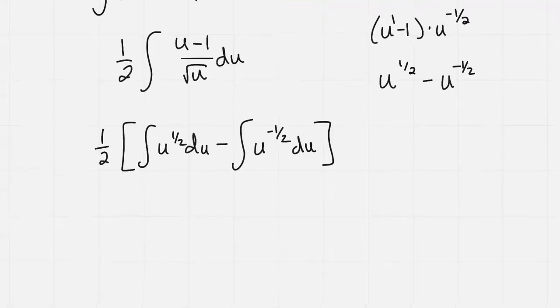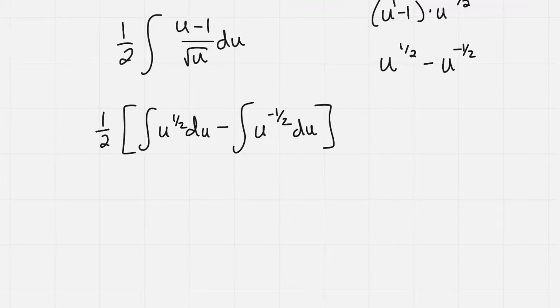And look at those anti-derivatives. This 1 half, I'll just keep all the way out in front. So u to the 1 half, add that. 1 half plus 1 is 1 half plus 2 over 2 is 3 halves. So this becomes u to the 3 halves, which you could also write as 2 thirds out in front.